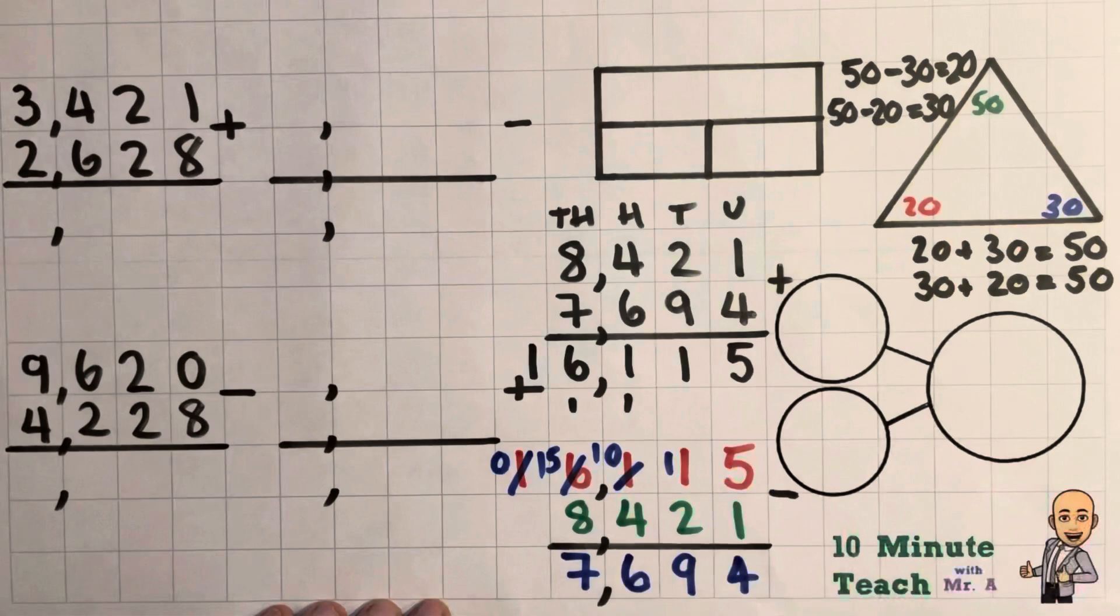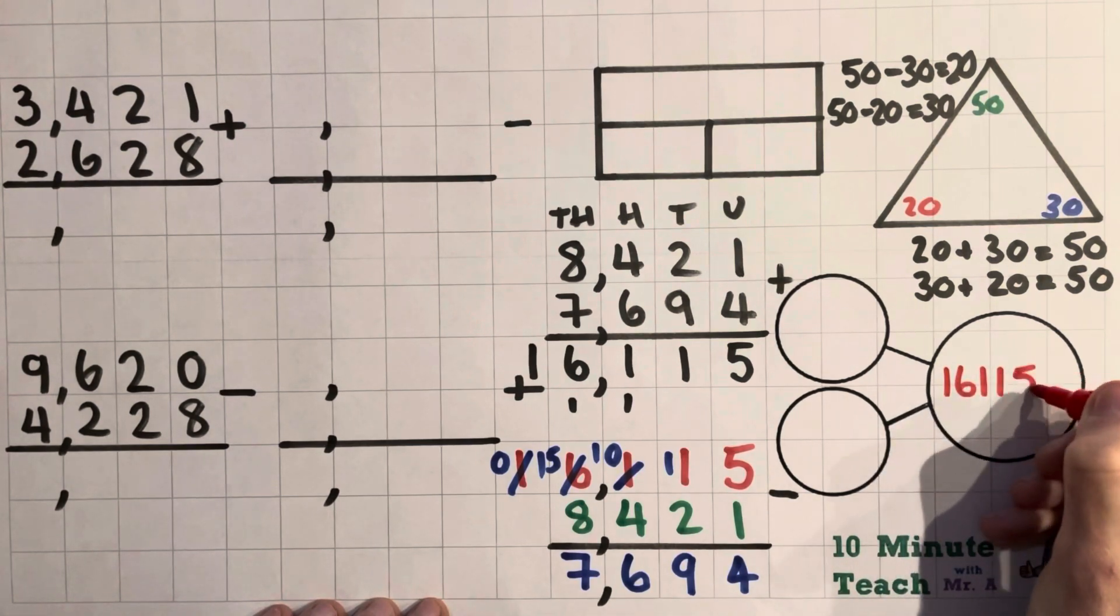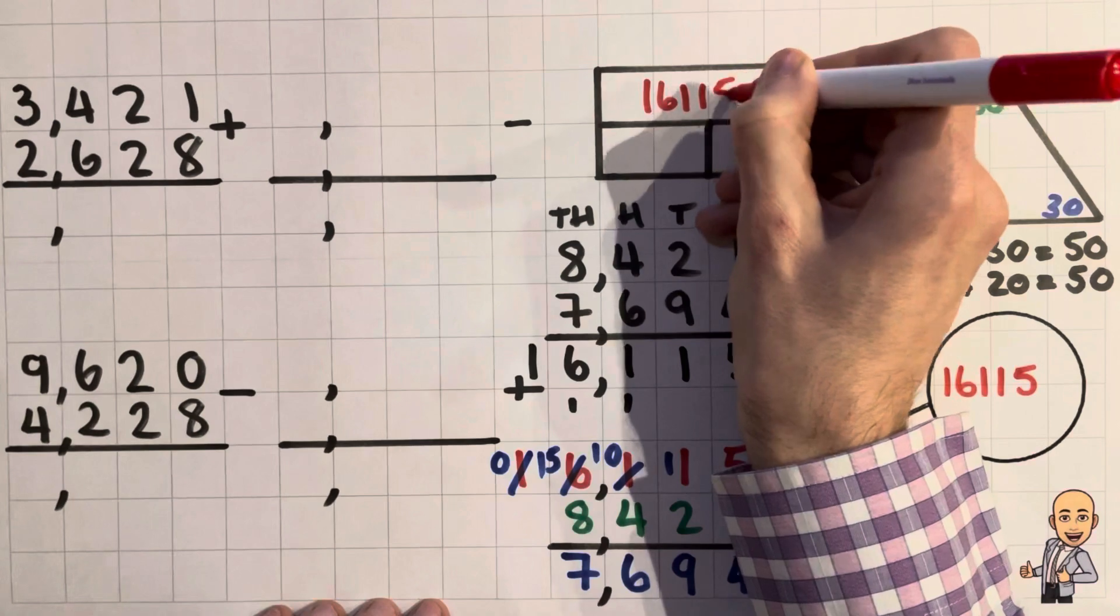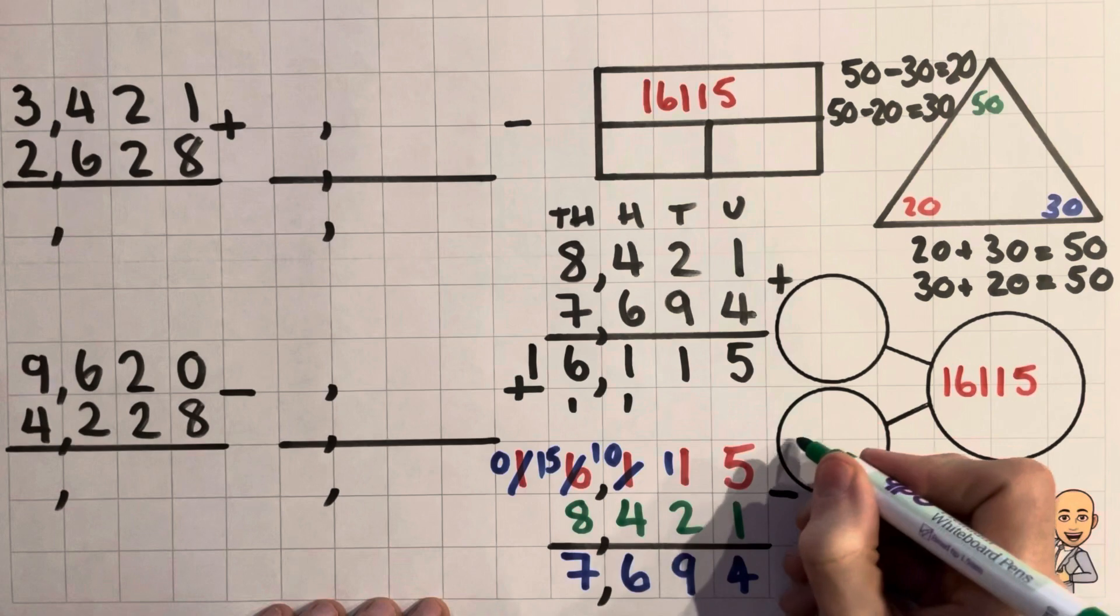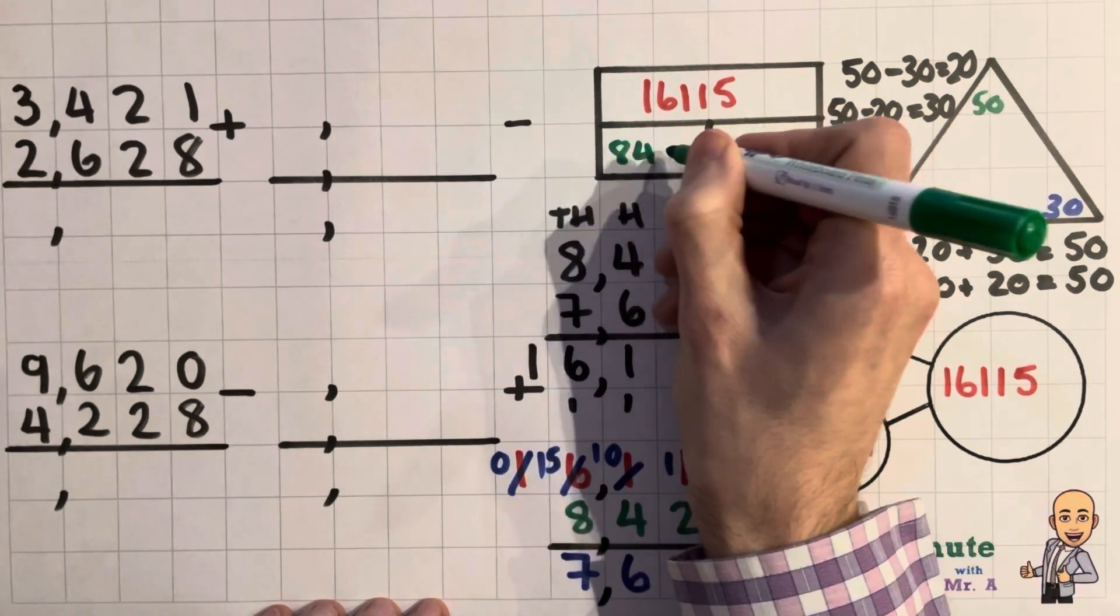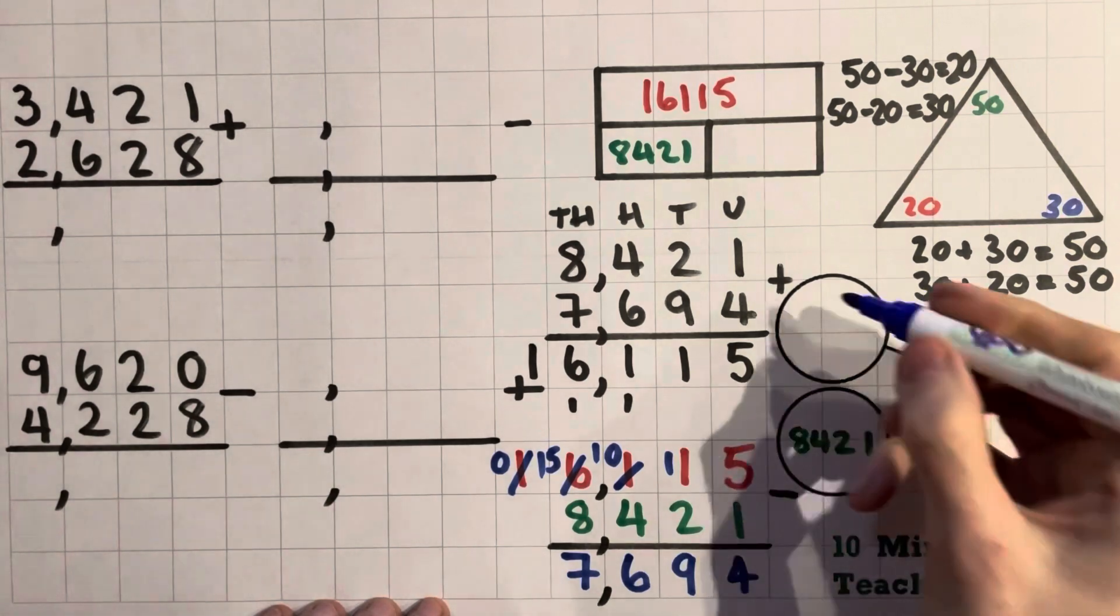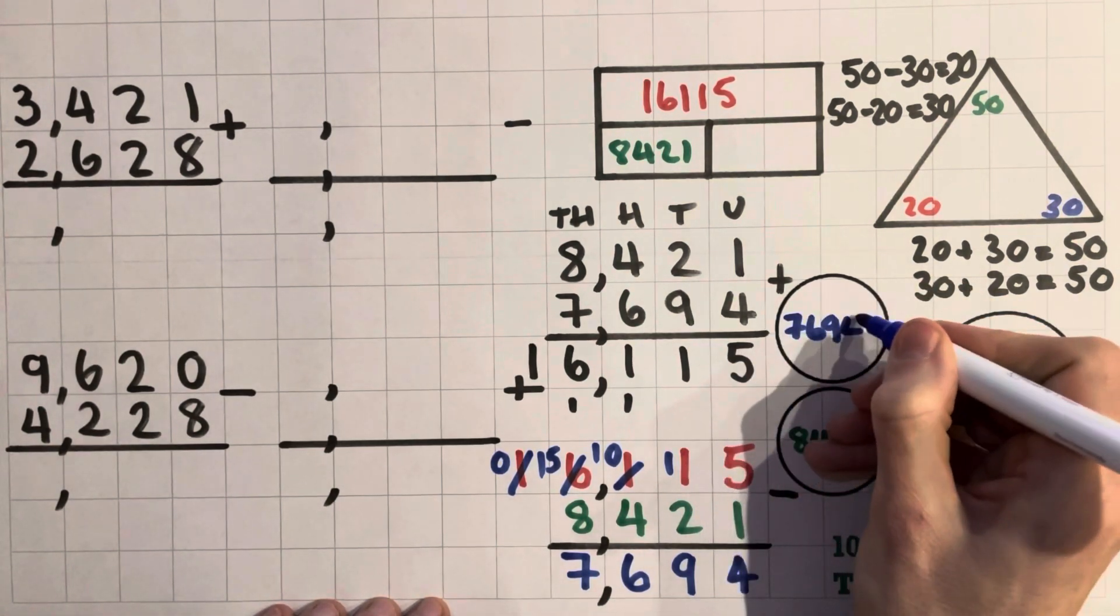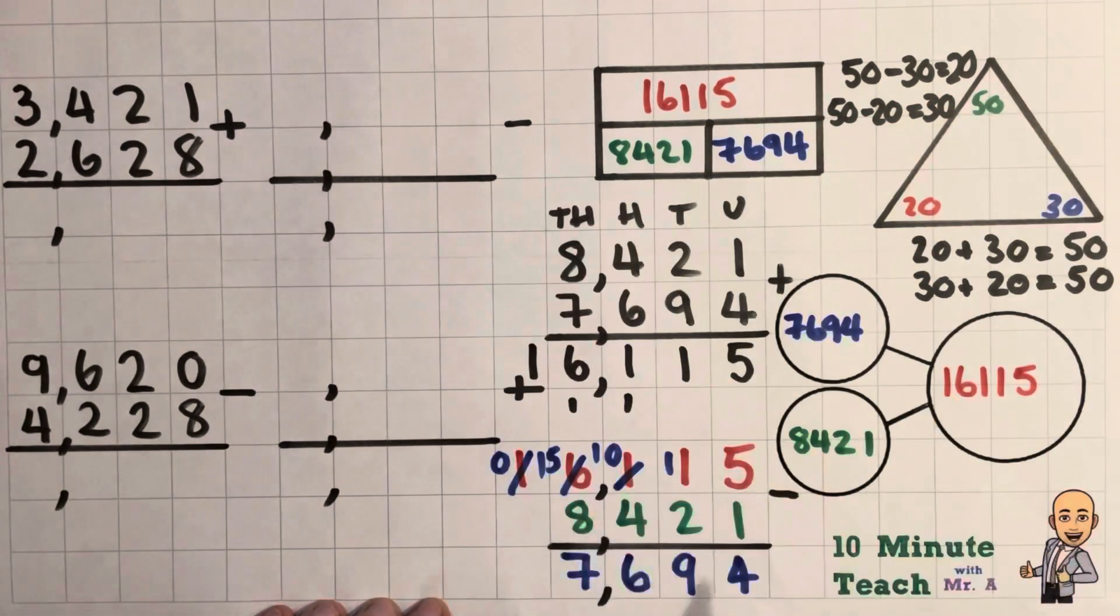So let's fill in these parts of our part whole model and our bar model. So because we have the largest part 16,115, let's fill those in. And then we've got the one that we decided to take away from it which is 8,421. And we were left with our third number which actually worked out very well, 7,694. So you can actually use that method to check any of your answers with addition and subtraction.